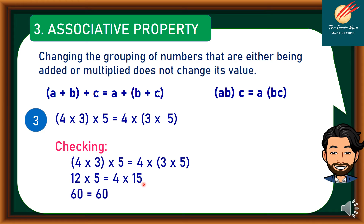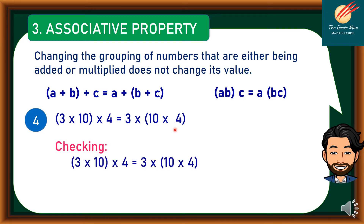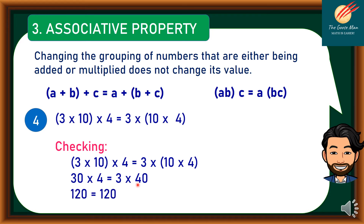Another multiplication example: (3 times 10) times 4 equals 3 times (10 times 4). Checking: 30 times 4 equals 3 times 40, so 120 equals 120.